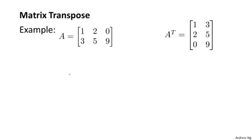Finally, the last special matrix operation I want to tell you about is the matrix transpose. So suppose I have a matrix A, if I compute the transpose of A, that's what I get here on the right. This is A transpose, which is written A superscript T. And the way you compute the transpose of a matrix is as follows. To get A transpose,